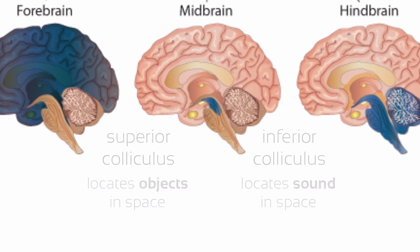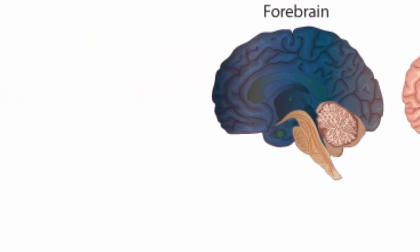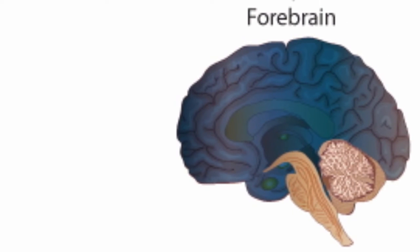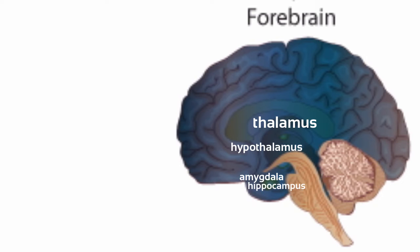That just leaves us with the forebrain. Because the forebrain is essential for our most advanced, high-level behaviors, we need to take a closer look here. As you can see, the forebrain is made up of the thalamus, hypothalamus, the limbic system — which includes the amygdala and the hippocampus — and the cerebrum.